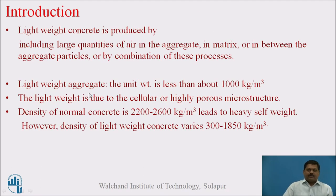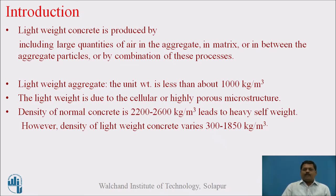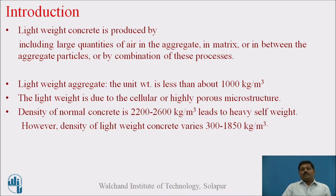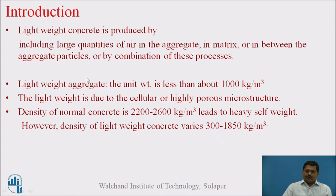Let us see the introduction of Lightweight Concrete. Definition-wise, Lightweight Concrete is produced by including large quantities of air in the aggregate, in the matrix, or in between the matrix particles, or a combination of these processes. Lightweight material can also be used to produce Lightweight Concrete, and basically the major mass-contributing material is the aggregate. If the unit weight is less than about 1000 kg per meter cube, these types of aggregates are designated as Lightweight Aggregates.